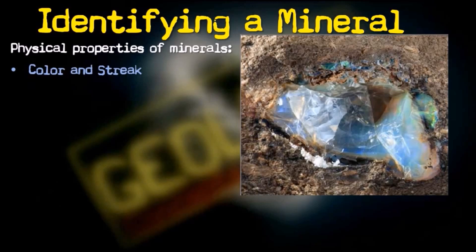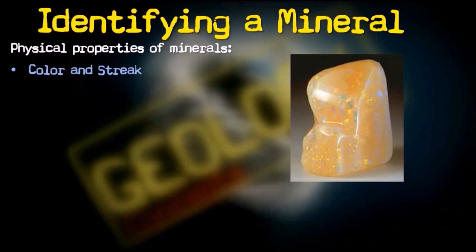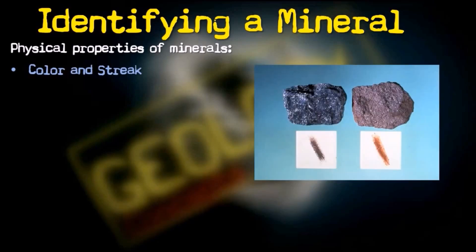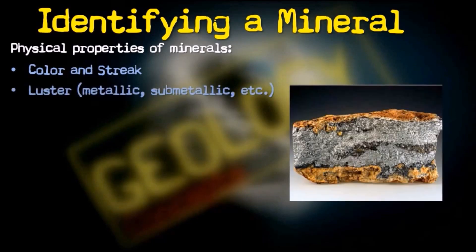Coming to the physical properties of minerals — the first is color and streak. Color can be used as an identification property for some minerals that occur in a specific color. For example, quartz cannot use color as an identification property because it occurs in many colors. However, azurite always occurs in blue and so color is a valid identification property for it. Streak is the color of a mineral in powder form — hematite has a black color but a red-brown streak, which can serve as its identification property.